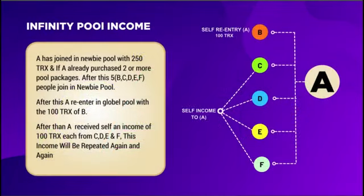The infinity pool income is also comprised of 5 people. If A joins the Newbie Pool with 250 TRX and has already purchased 2 or more pool packages, after 5 more people join, A re-enters the global pool with 100 TRX from B, then receives self-income of 100 TRX each from C, D, E, and F. This income repeats again and again.